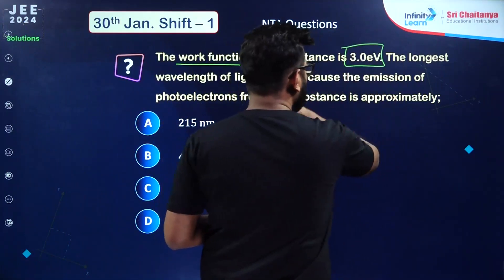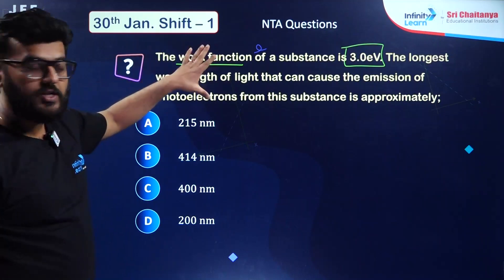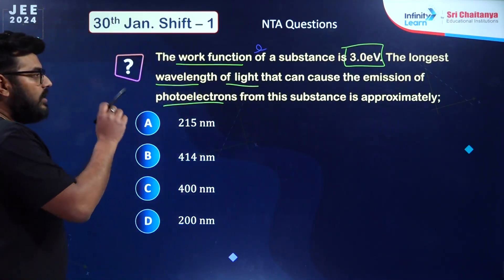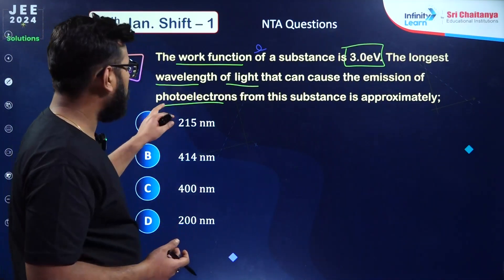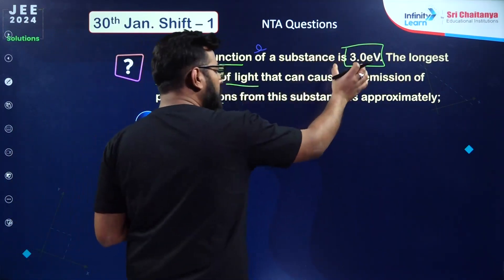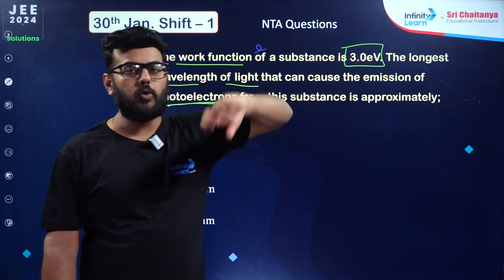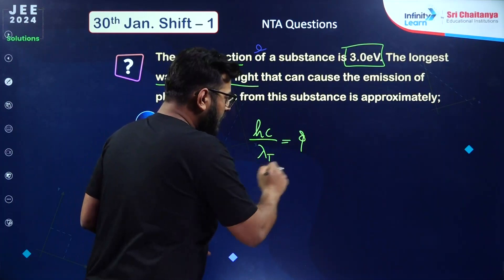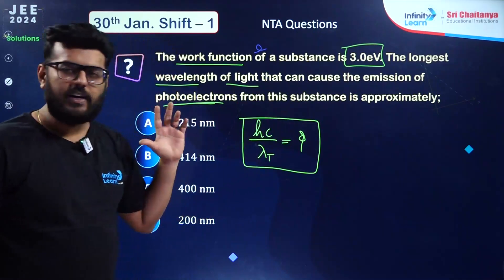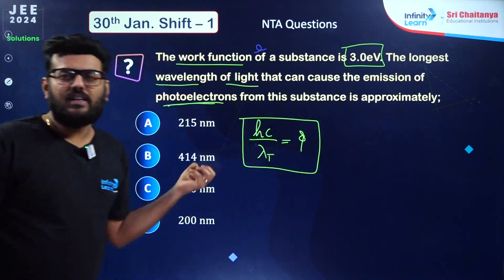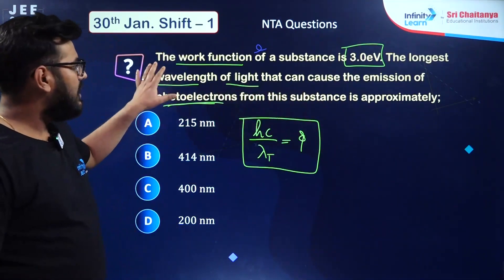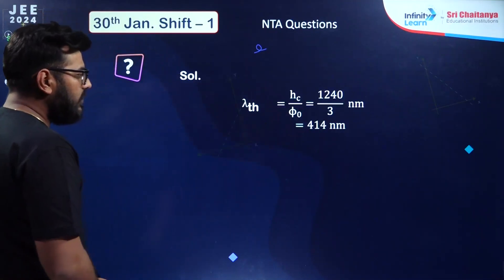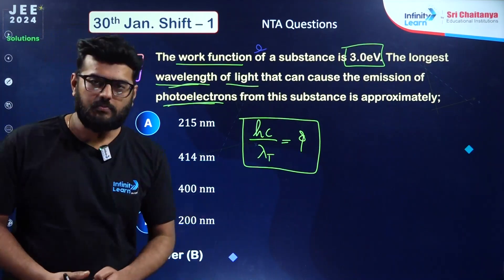The next question is from dual nature of matter and radiation — photoelectric effect. Work function of a substance is 3 electron volt. The longest wavelength of light that can cause emission of photoelectrons is asked. We need the threshold wavelength: hc/λ_t equated with the work function gives the answer. The wavelength must be less than threshold for photoelectrons to be emitted. Using hc/λ = work function, the answer is 440 nanometer, option number B.